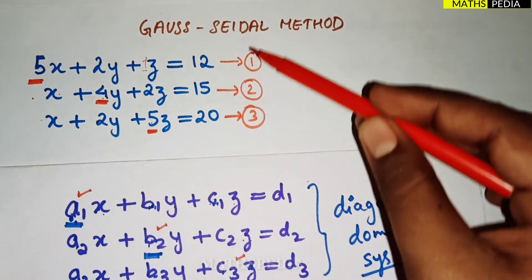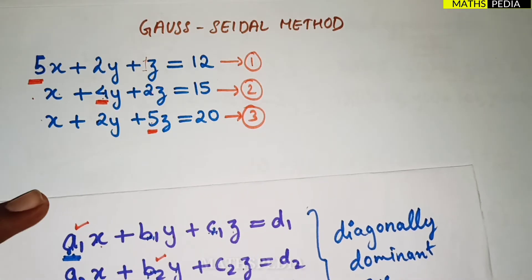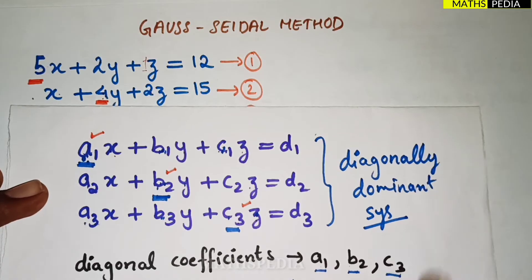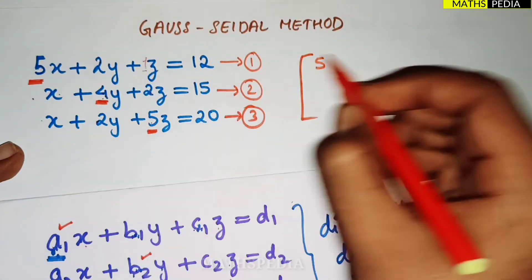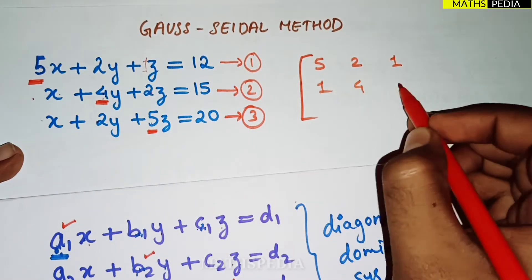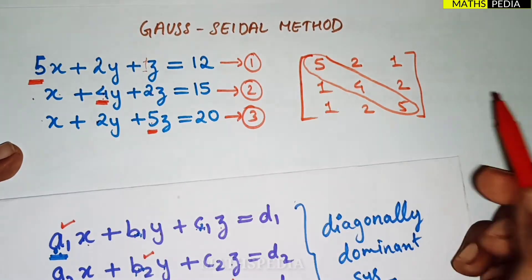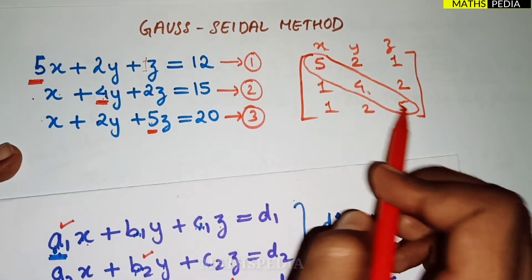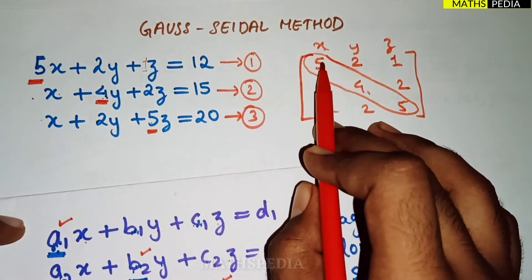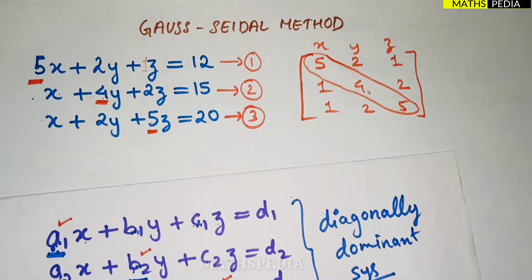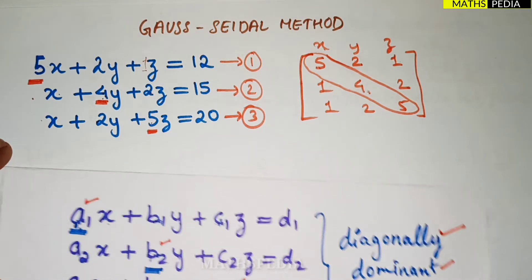Sometimes the equations are given in jumbled order, so you need to be careful to rearrange them. This is called a diagonally dominant system. Writing the matrix, we get 5, 2, 1 in the first row; 1, 4, 2 in the second; and 1, 2, 5 in the third. You can observe the diagonal elements 5, 4, 5 are the dominant — largest — values compared to the other coefficients in their respective rows.